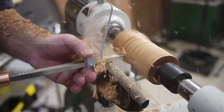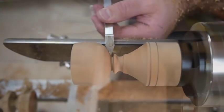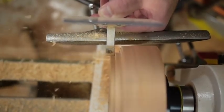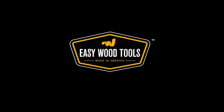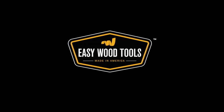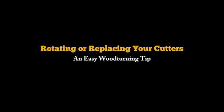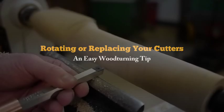The genuine EWT carbide cutter stays sharp for a very long time. This means you get a super fine cut and never spend time with a grinder sharpening your tools. But the cutters do eventually get dull. Today's Easy Wood Turning Tip, we're going to show you how to properly rotate and replace your cutters.